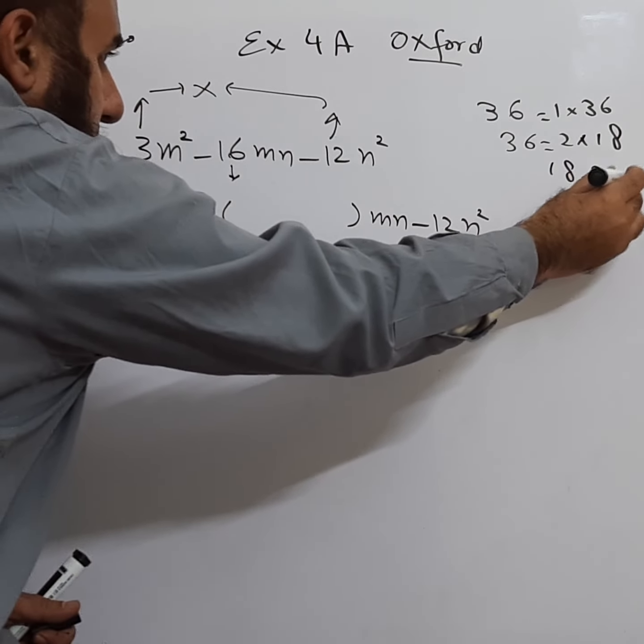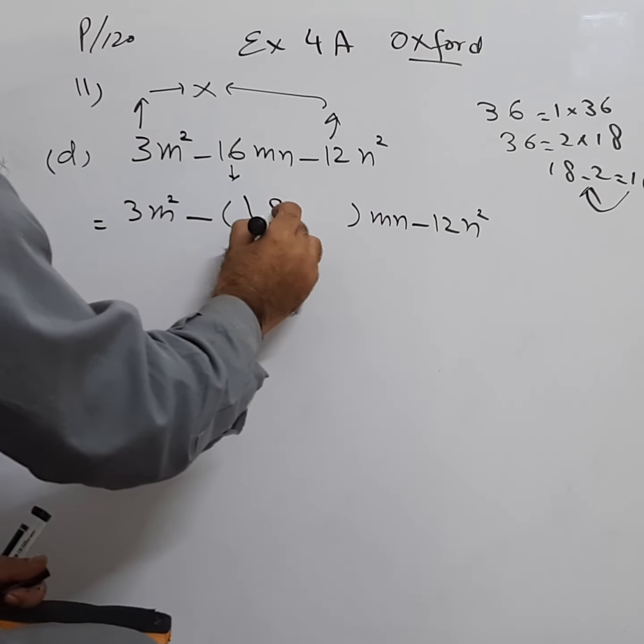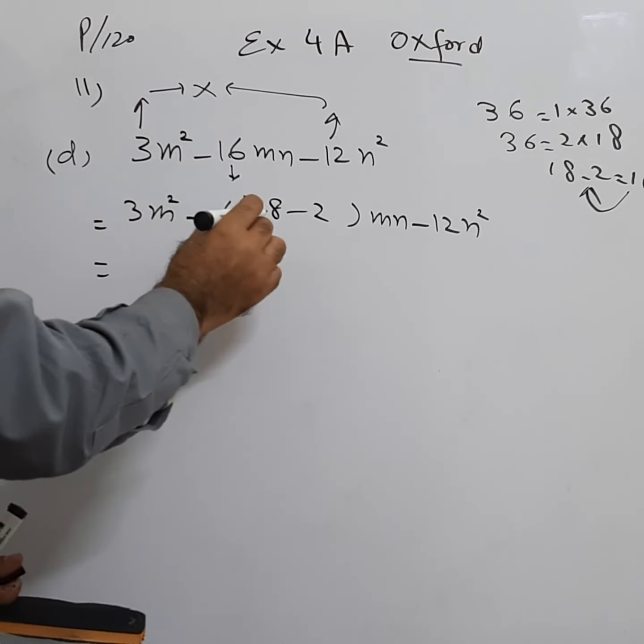So we need 16, so we can write it as 18 minus 2. Now we'll open the bracket.